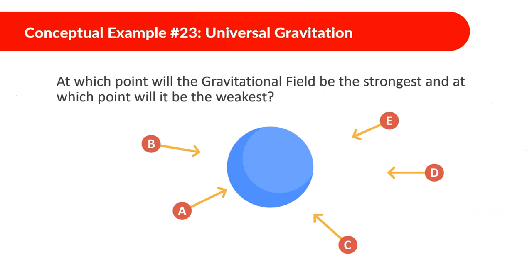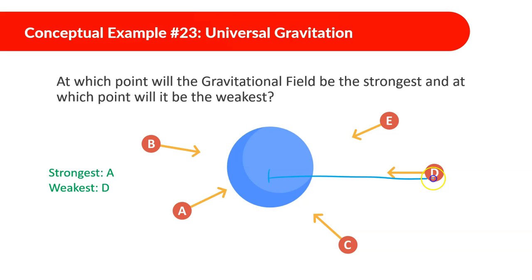Looking at this conceptual example: at which point will the gravitational field be the strongest, and at which point will it be the weakest? It will be strongest at point A because it is the closest, and weakest at point D because it is the furthest.